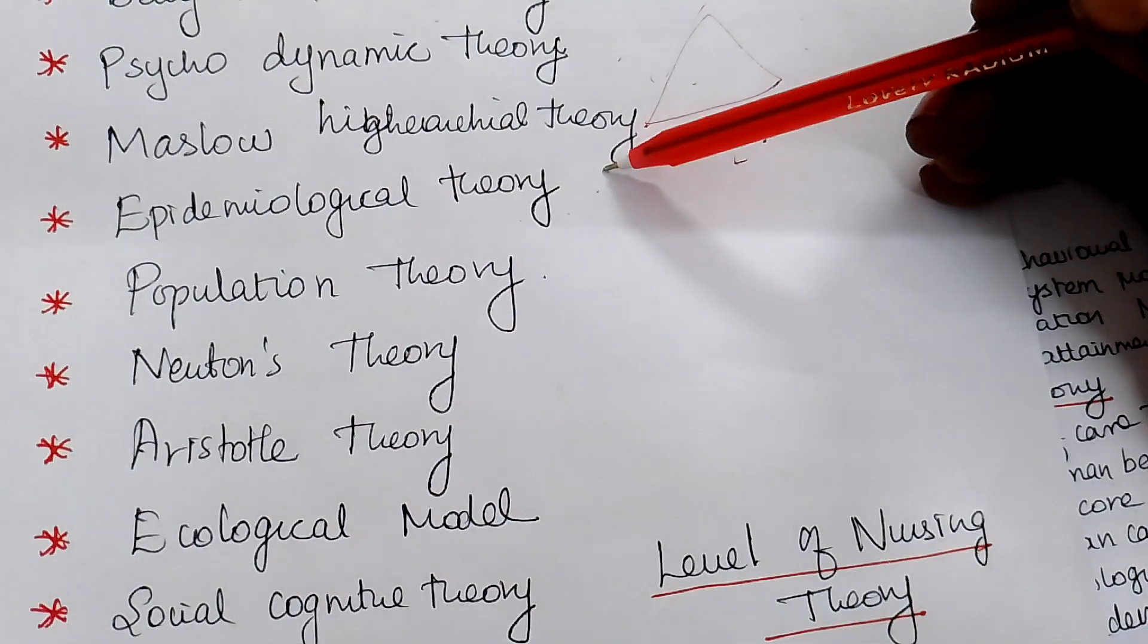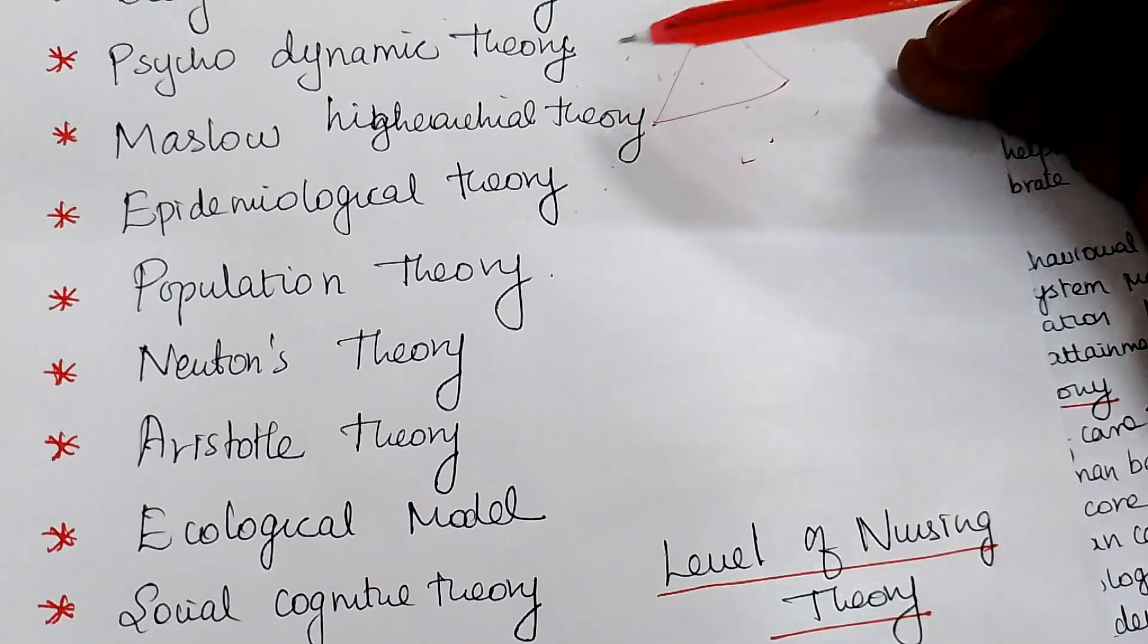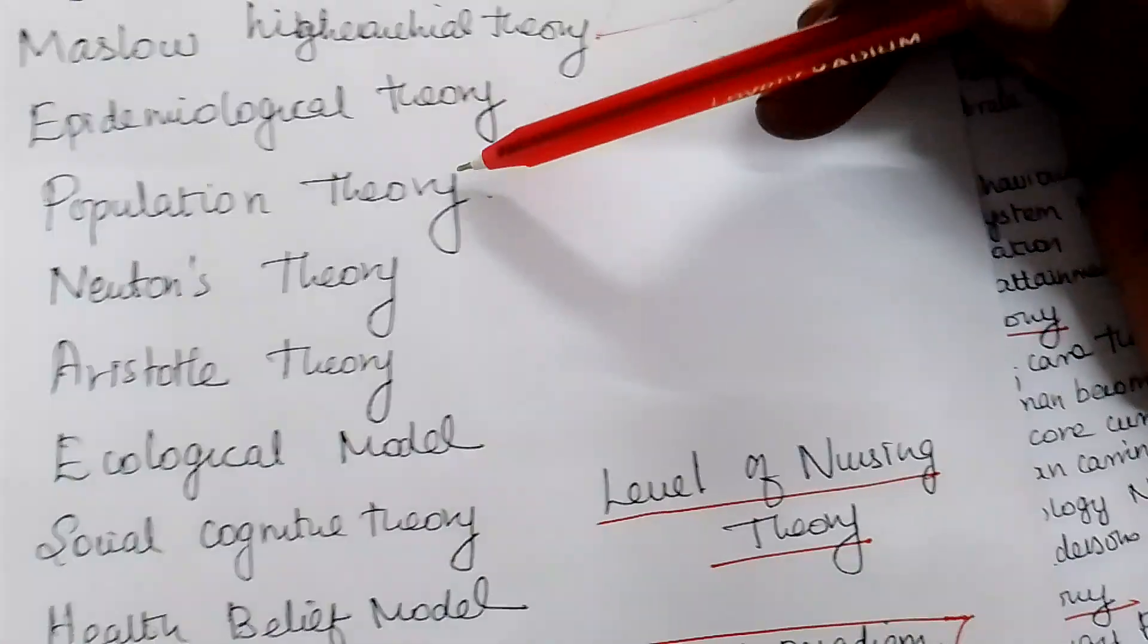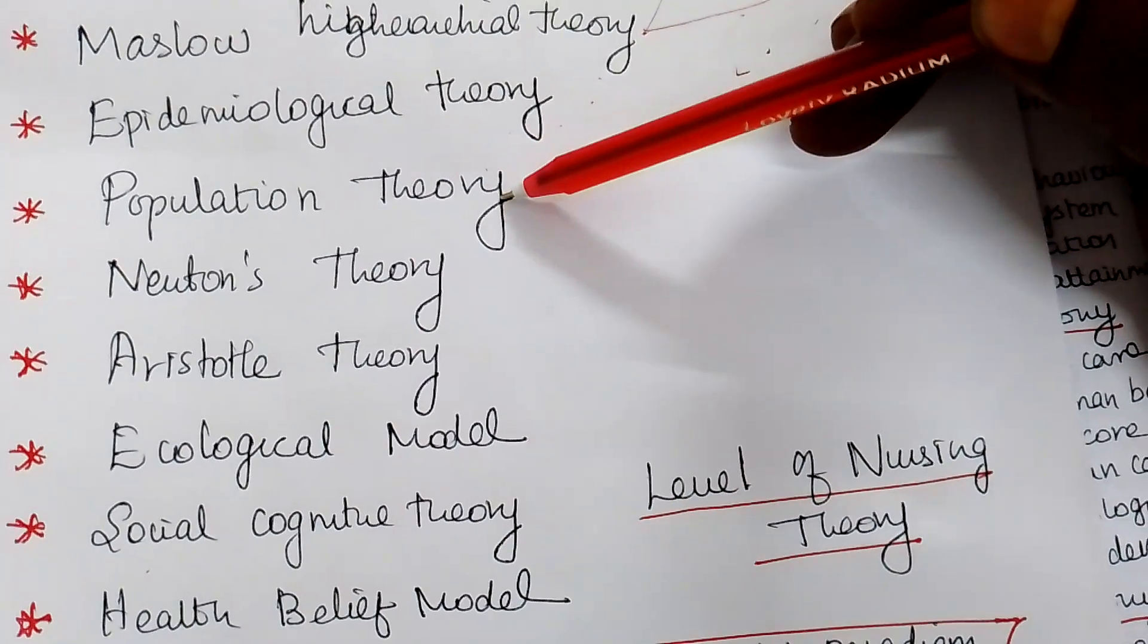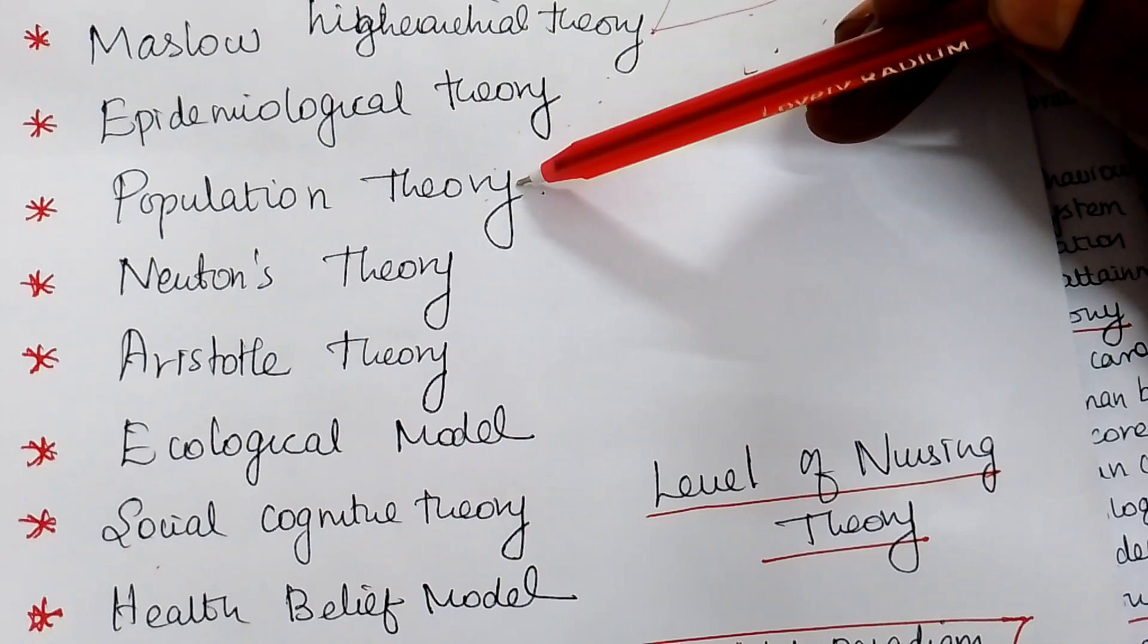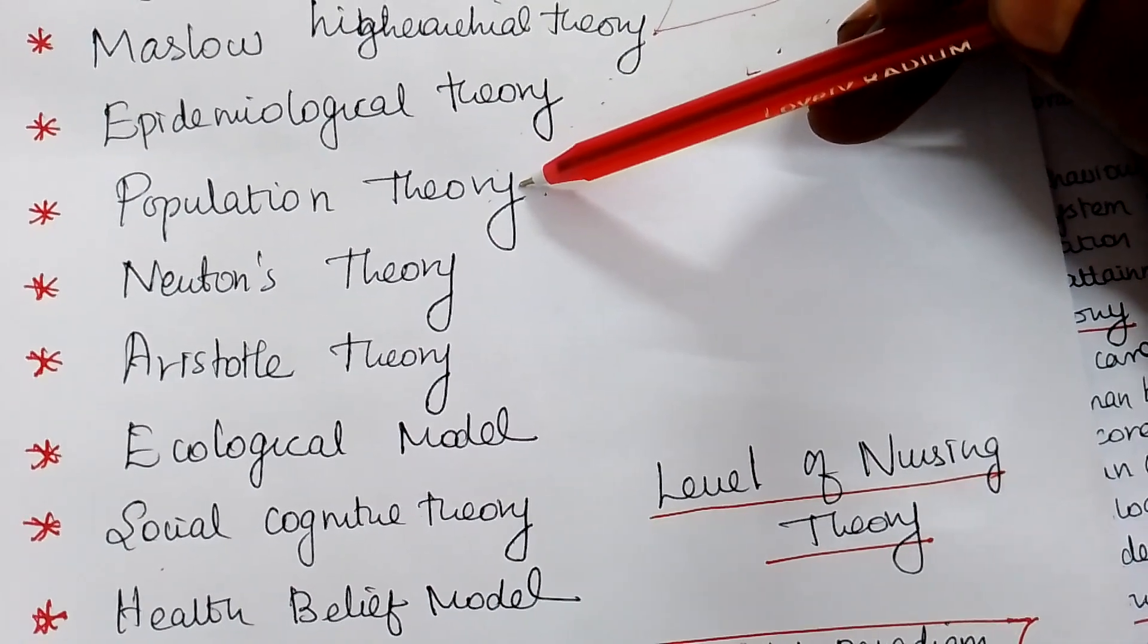Then Maslow hierarchy theory. It is stating about the need of the individual, human need. Then population theory. You think that the population, the theories are always dynamic. You have to understand that. Why it is dynamic?